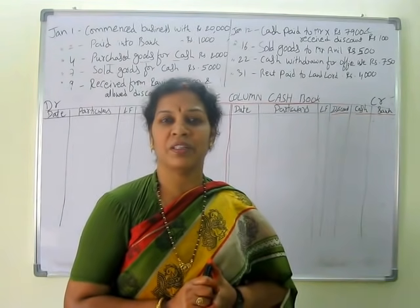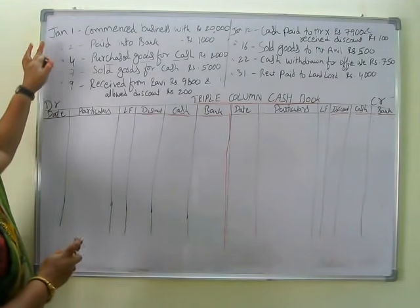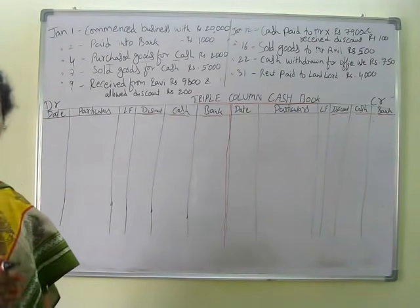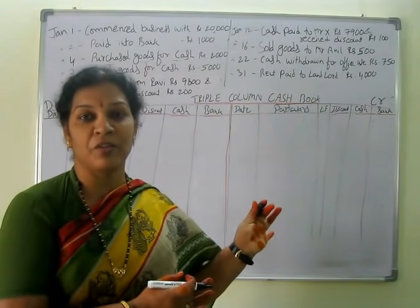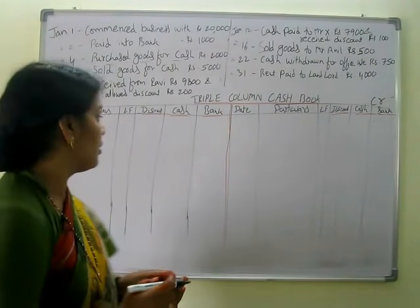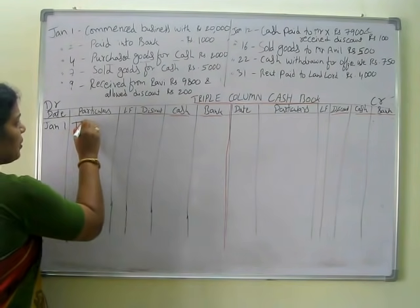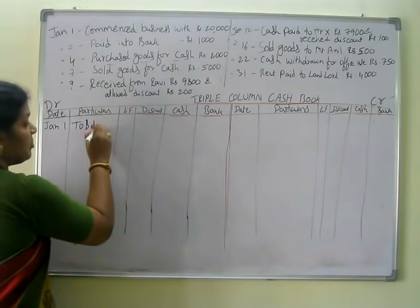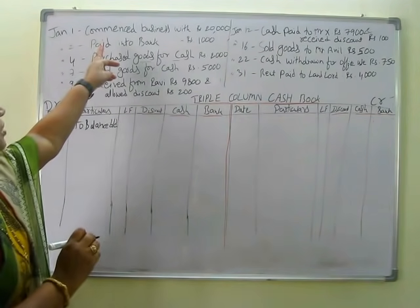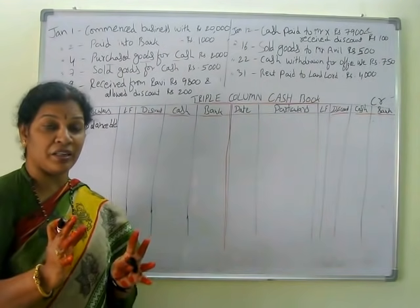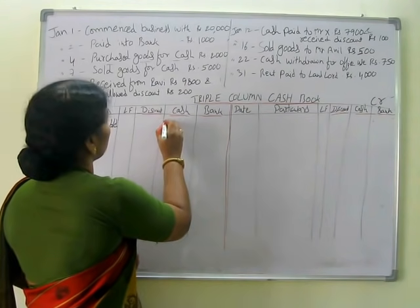We will solve one problem and you will get clarity. The first transaction: January 1st, commence business with 20,000 rupees. Whenever we start business that will be the opening balance. Opening balance will be on the debit side of the cash book. So January 1st, balance brought down — 20,000. That is cash, so we will write it in the cash column: 20,000.